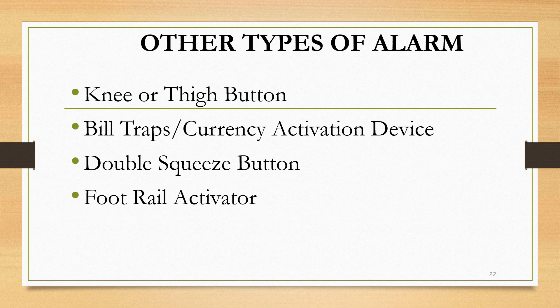Other types of alarm include: knee or tie button, bill traps or currency activation device, double squeeze button, and footrail activator.